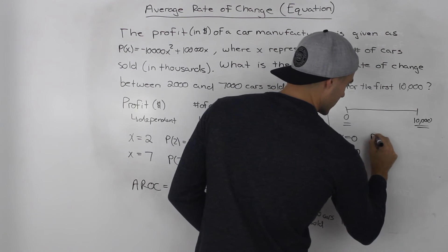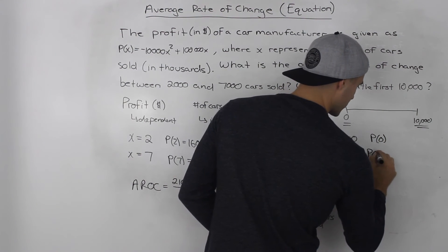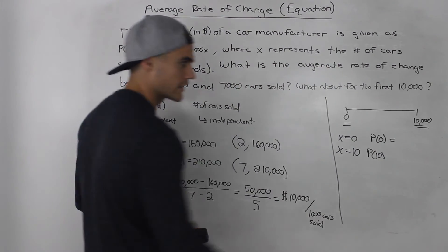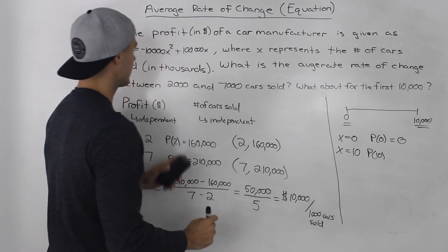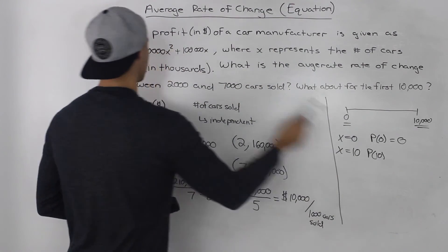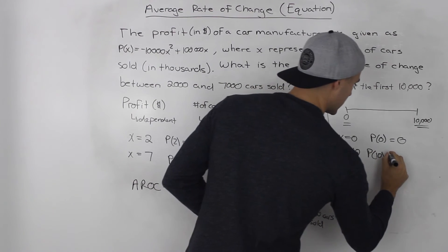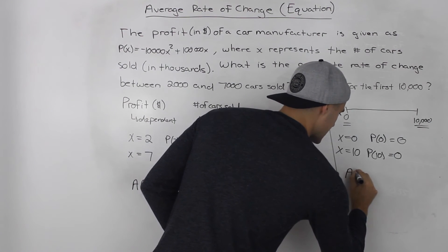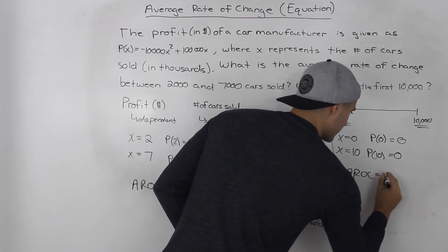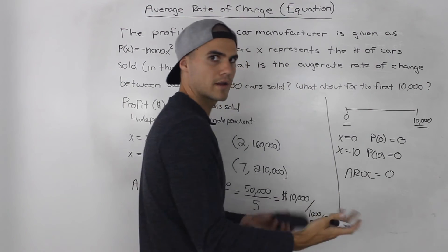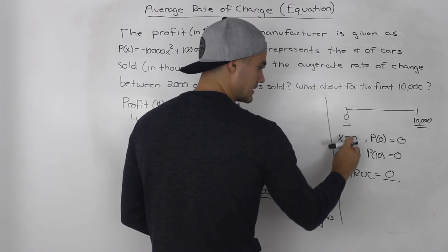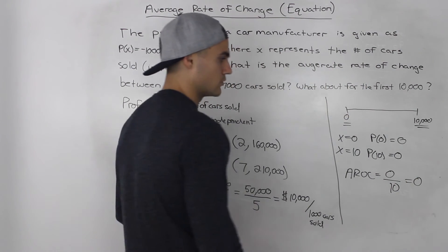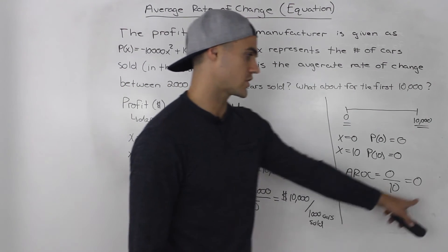Plugging x = 0 into the profit equation gives 0, and plugging in x = 10 also gives 0. So the average rate of change is 0 minus 0 over 10 minus 0, which equals 0 dollars per 1,000 cars sold. The average rate of change is 0.